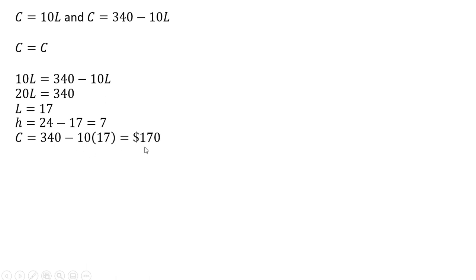The person will be able to afford $170 worth of goods and services. And the person's utility at this level, utility of C times L, 170 times hours of leisure, gives us $2,890.